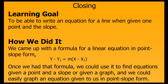In closing, let's review our learning goal. We wanted to learn how to write an equation for a line when given one point and the slope. We did that by coming up with a formula called the point-slope form of a linear equation. Once we had that, we could find equations when given one point and the slope, or when given a graph. We could also easily graph an equation that was given to us in point-slope form.